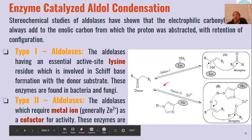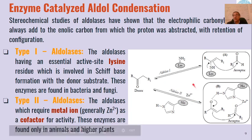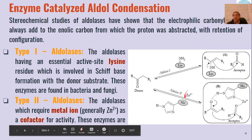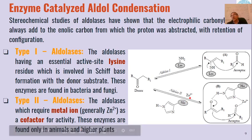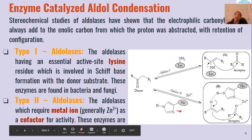Type 2 aldolases use a metal ion as a cofactor for their activity — generally zinc(2+) ions — and the active site contains histidine. First, an enolate is formed with the donor molecule, and then that enolate reacts with the acceptor at the active site to give the aldol product.